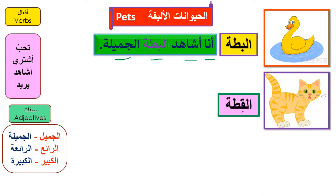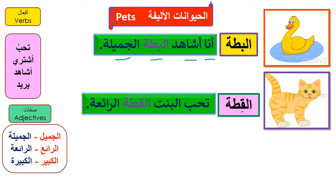Here's القطة. القطة تحب البنت — the girl likes the cat. القطة الرائعة means 'the wonderful cat.' This is the last sentence tied with تحب البنت, the girl likes.